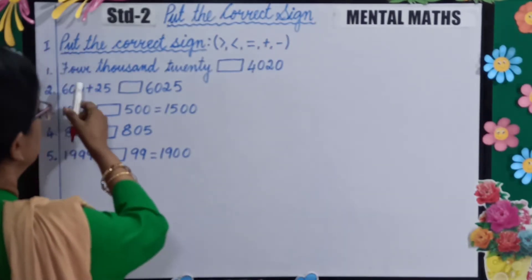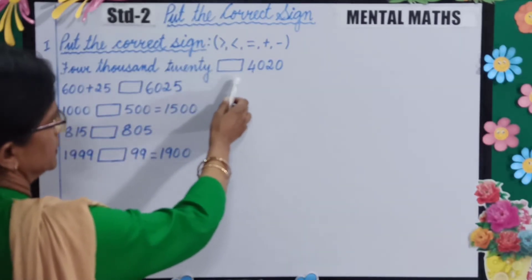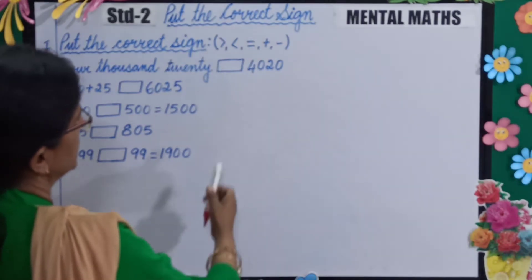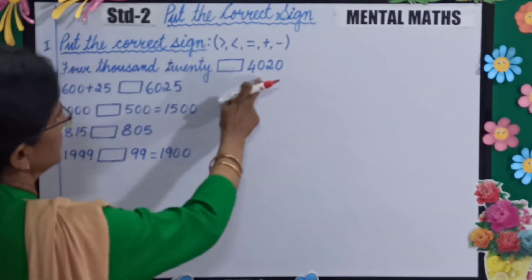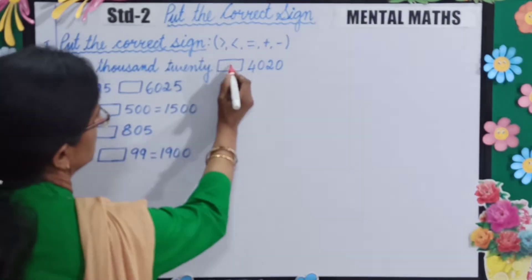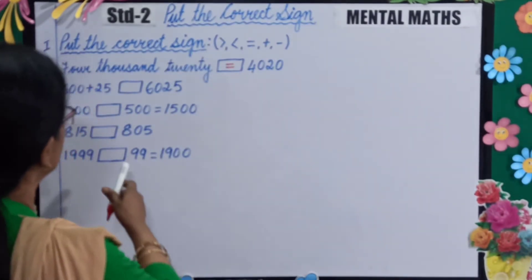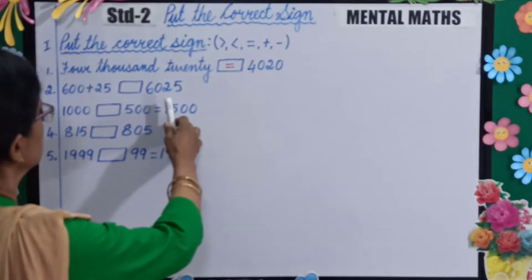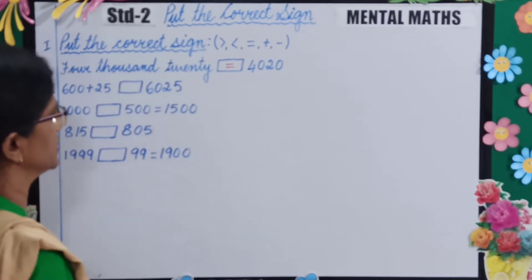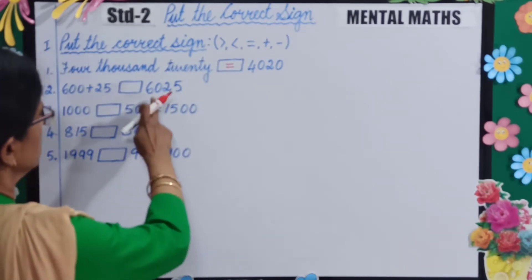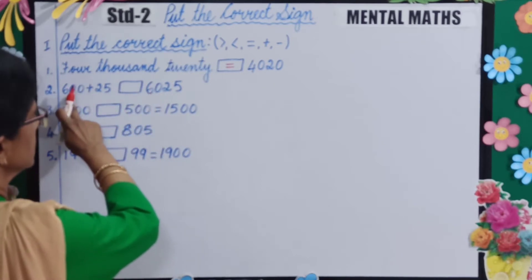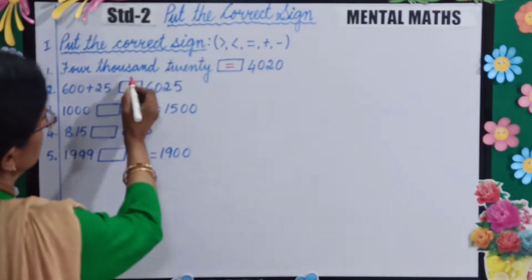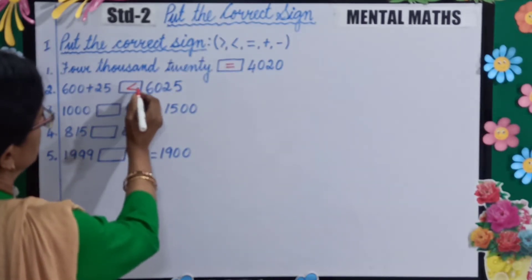Your first question is 4020 dash 4020. So which sign will you put, children? Both are the same, so you will put the equal sign. Next: 600 plus 25 dash 6025. This is in the thousands place and this is in the hundreds place, so 6025 is greater. You will put the greater than sign.